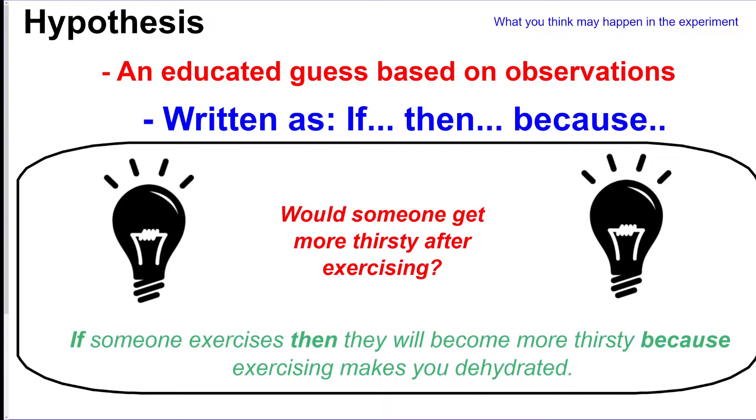Then you're going to make a hypothesis. This is going to be what you think may happen in that experiment. It's just a guess, so normally you write it as an if-then-because statement, which you could see I wrote down below. An example: if someone exercises, then they will become more thirsty because exercising makes you dehydrated. So it's if they do something, then what do you think will happen, because whatever your reason would be.